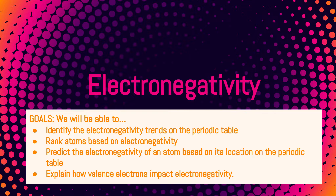Hi everyone, it's Mrs. Summer here to discuss the electronegativity trend of atoms on the periodic table. The goals for this lesson are that you will be able to identify the electronegativity trends on the periodic table, rank atoms based on electronegativity, predict the electronegativity of an atom based on its location on the periodic table, and explain how valence electrons impact electronegativity.